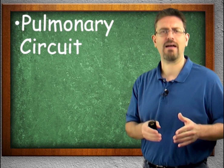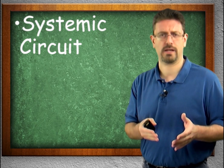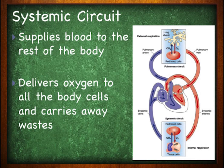Then we have the systemic circuit. The systemic circuit goes throughout the body — from your heart to your toes and back. It supplies blood to the rest of the body, delivers oxygen to all the body cells, and carries away the waste products.